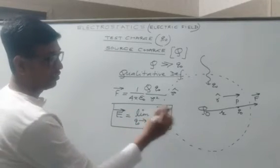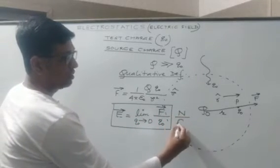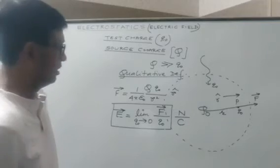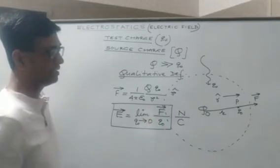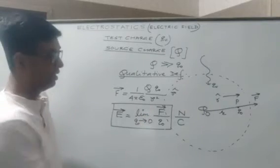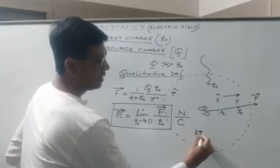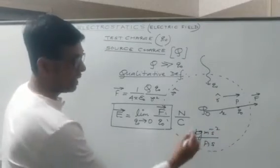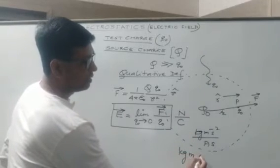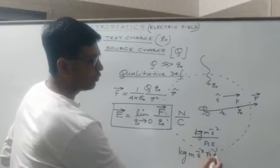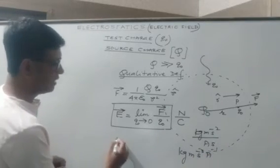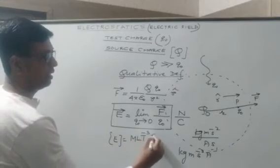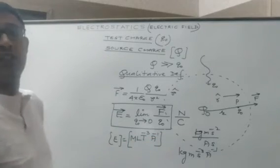What about its SI unit? The SI unit of force is Newton and the SI unit of charge is Coulomb, so the SI unit of electric field is Newton per Coulomb. We can use the basic units to arrive at its dimensional formula: Newton is kg·m·s⁻², Coulomb is A·s, so the dimensional formula works out to M L T⁻³ A⁻¹. This is the dimensional formula for electric field.